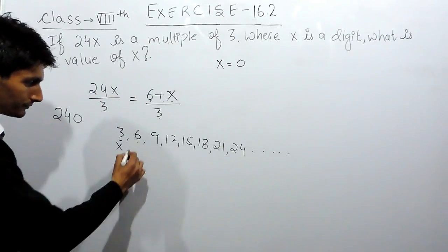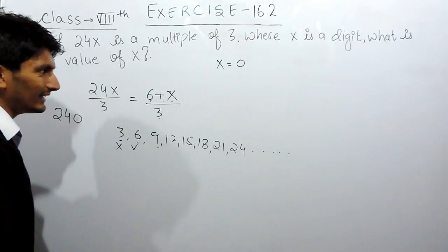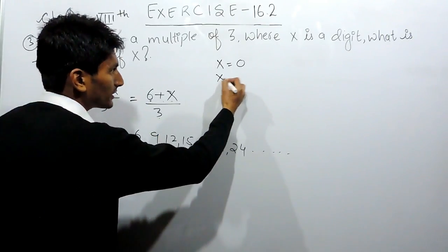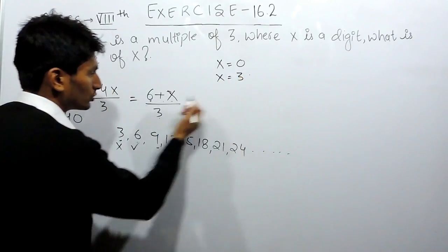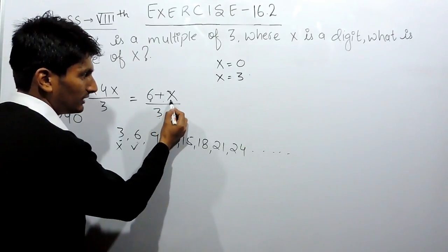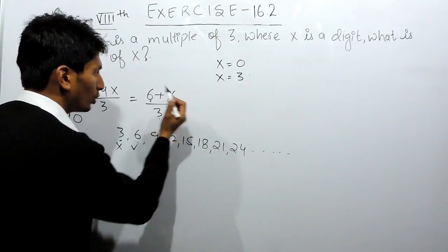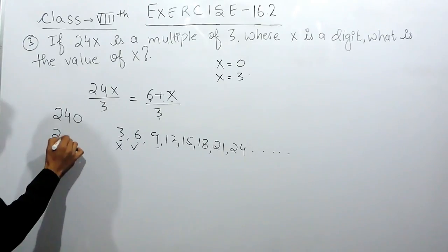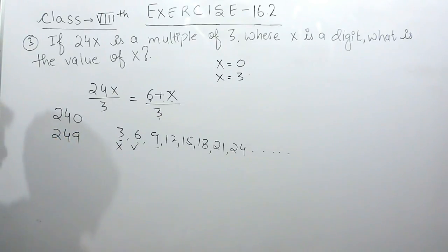Now if I substitute x equals 3, this becomes 6 plus 3, which is 9, and 9 is divisible by 3. So the second number will be 249.